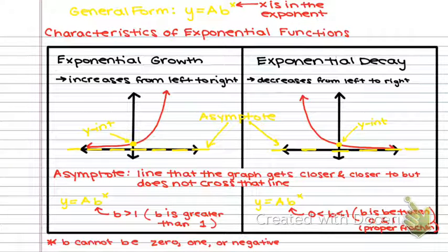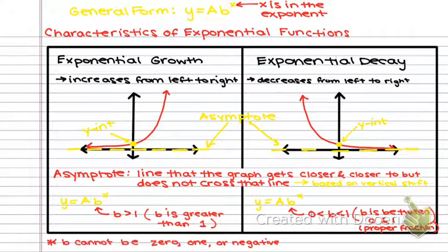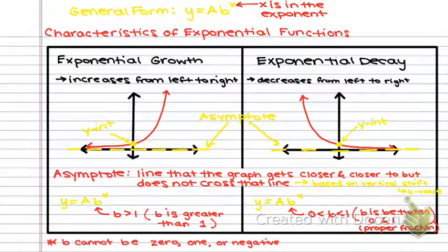Let's go back to asymptote and add one piece: the asymptote is going to be based on the vertical shift, which is basically the k value. If your k is seven, your asymptote is at y equals seven. If your k is negative two, your asymptote is at y equals negative two. That's all for characteristics — next we'll do examples where we determine whether something is growth or decay and find the asymptote.